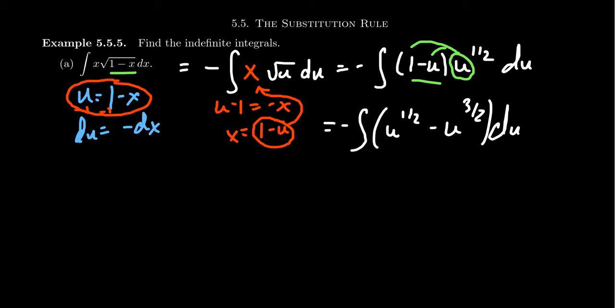And by the power rule and the linearity properties of anti-derivatives, we can calculate that anti-derivative. Absolutely. So I would say our u substitution is a success because it put us in a situation that was easier to calculate than we had before.